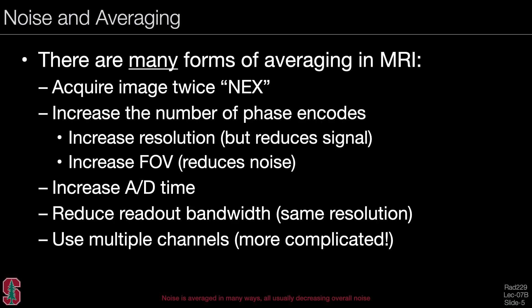There are many forms of averaging in MRI. We can acquire an image twice, often referred to as two averages or two NEX. We can increase the number of phase encoding lines — by increasing resolution, though this will reduce signal as we'll discuss later, or by increasing the field of view, which will reduce the noise. You can increase the acquisition time or A-to-D time, reduce the readout bandwidth and keep the resolution the same, or use multiple channels, which is another form of averaging that will be dealt with in the next lecture.